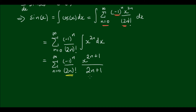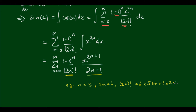We can actually combine the two terms — the factorial and the 2n plus 1 — because 2n plus 1 is simply the next term from 2n. For example, if n equals 3, then 2n equals 6, so (2n) factorial is 6 × 5 × 4 × 3 × 2 × 1, and 2n plus 1 is the next term, so we multiply by 7, giving 7 factorial. Generally, this becomes (2n + 1) factorial.